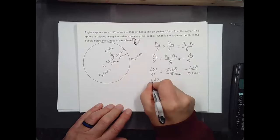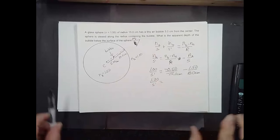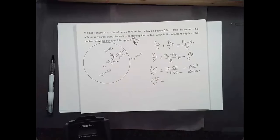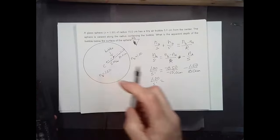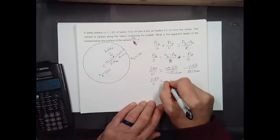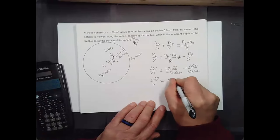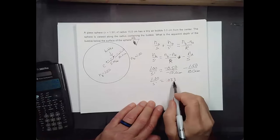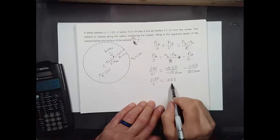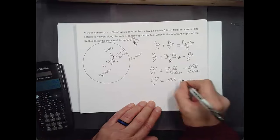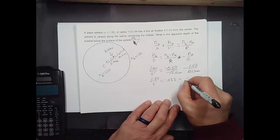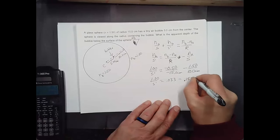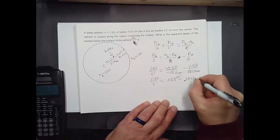So 1.00 over S prime. I'm going to solve these individually. This ends up being positive: 0.5 divided by 15 is 0.033, and I've only got two significant figures on this. Minus 1.50 over 10 is 0.150. Minus 1.50, and both of these are centimeters to the minus 1.